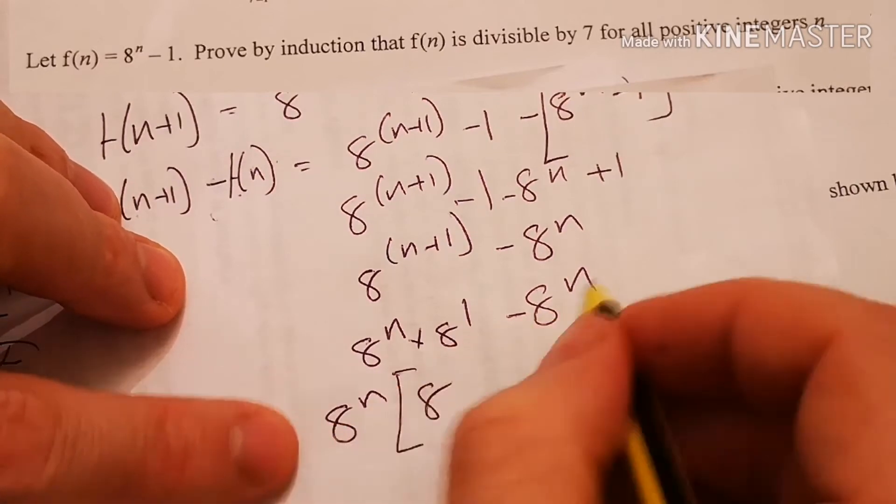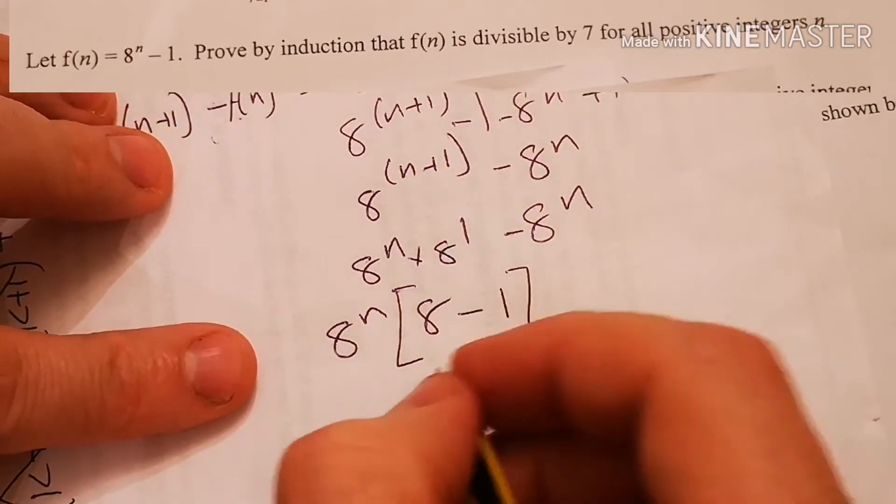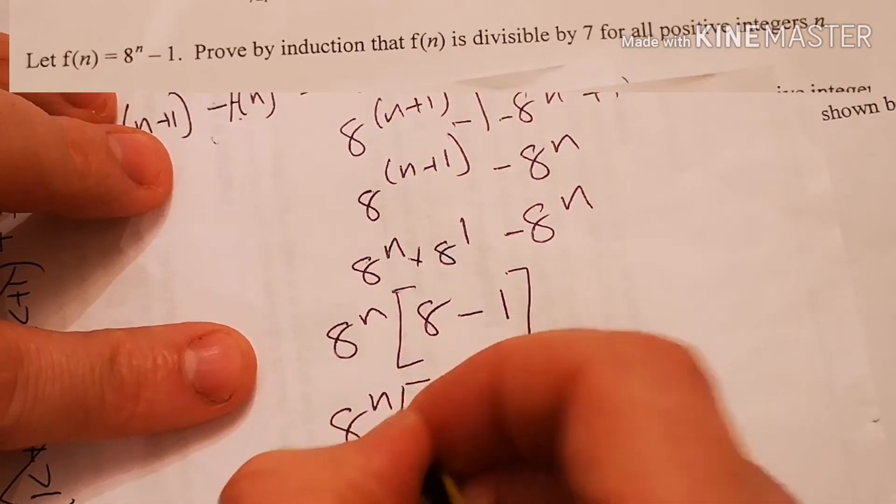This would just be 8 minus, and 8^n times 1 is 8^n. 8 minus 1 is 7, so 8^n times 7.